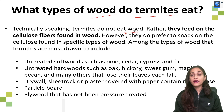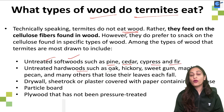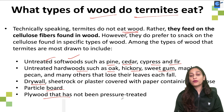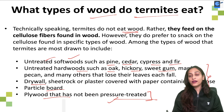Termites feed on cellulose fibers found in various types of wood. Their preferred foods include untreated softwoods like pine, cedar, and cypress, as well as hardwoods like oak, hickory, sweetgum, and maple.